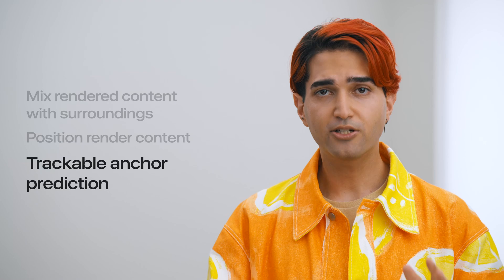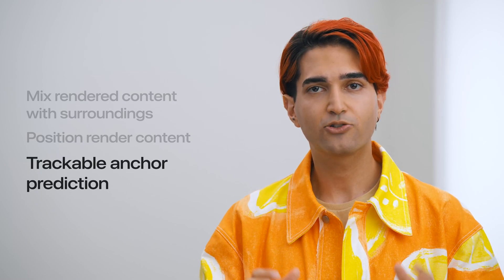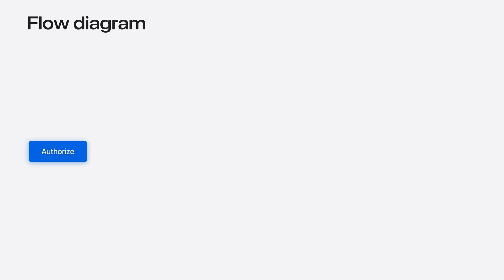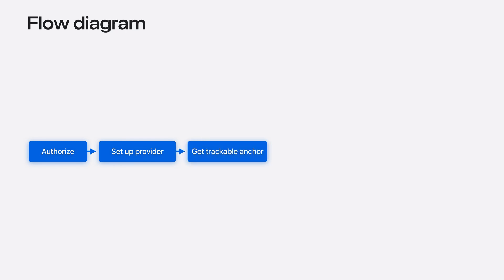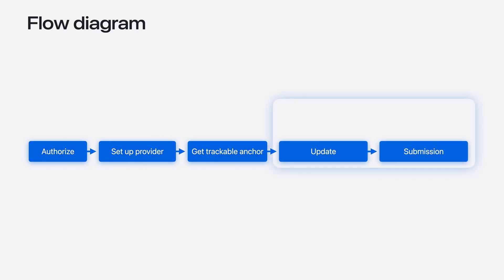After you have positioned your rendered content, it is time to think about what happens when people interact with it. An anchor represents a position and orientation in the real world. Trackable anchors are entities the system can gain and lose tracking state over the course of a session — for example, a person's hand is a trackable anchor entity. To set up a trackable anchor, you will first authorize your connection to ARKit and request authorization for the type of data you'd like to access. Next, set up a provider — a data provider allows you to poll for or observe data updates like an anchor change. And ultimately, acquire a trackable anchor from ARKit APIs. On a per-frame cadence inside the render loop, first update the logic in your renderer and then submit your data to Compositor Services.